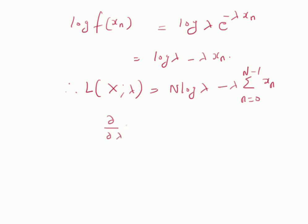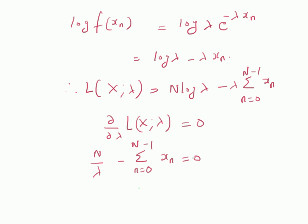We equate the derivative of the log-likelihood function to zero. The derivative is given by N over lambda minus the summation from n=0 to n minus 1 of x_n equals zero. Therefore the solution is: lambda hat equals 1 divided by (1/N times the summation of x_n).